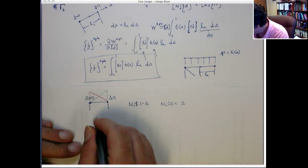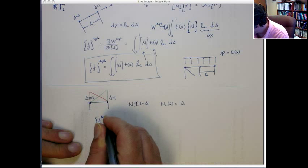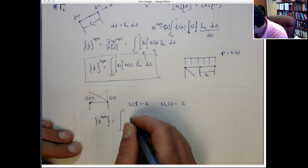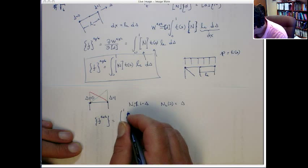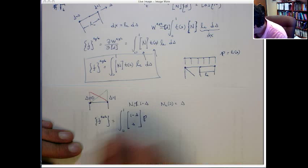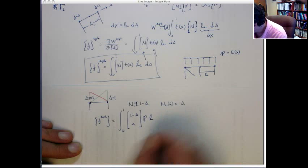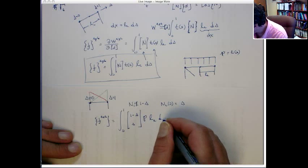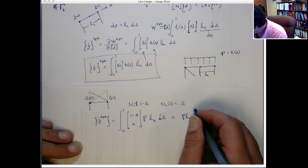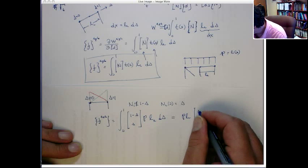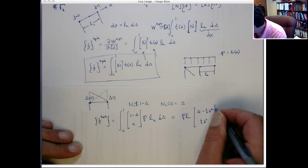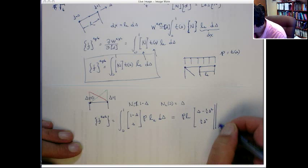Writing this out: we integrate from 0 to 1. The shape functions are [1 minus s, s]. The traction is a constant p. It has an edge length of le. And we integrate with ds. The constants come out.